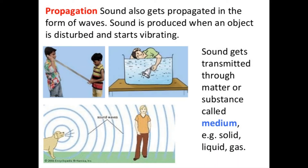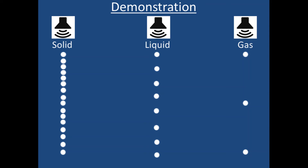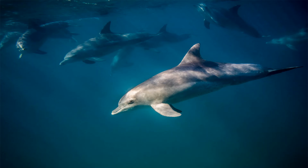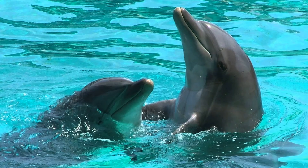Now let's talk about how sound behaves in different mediums — that is, in solids, liquids, and gases. Sound travels faster through solids than through liquid mediums, and sound travels faster through liquids than through gaseous mediums. For example, the sound emitted by dolphins can be heard clearly when we are underwater, but the same sound above water can be heard only very faintly. The reason is that sound travels faster through water than through air.